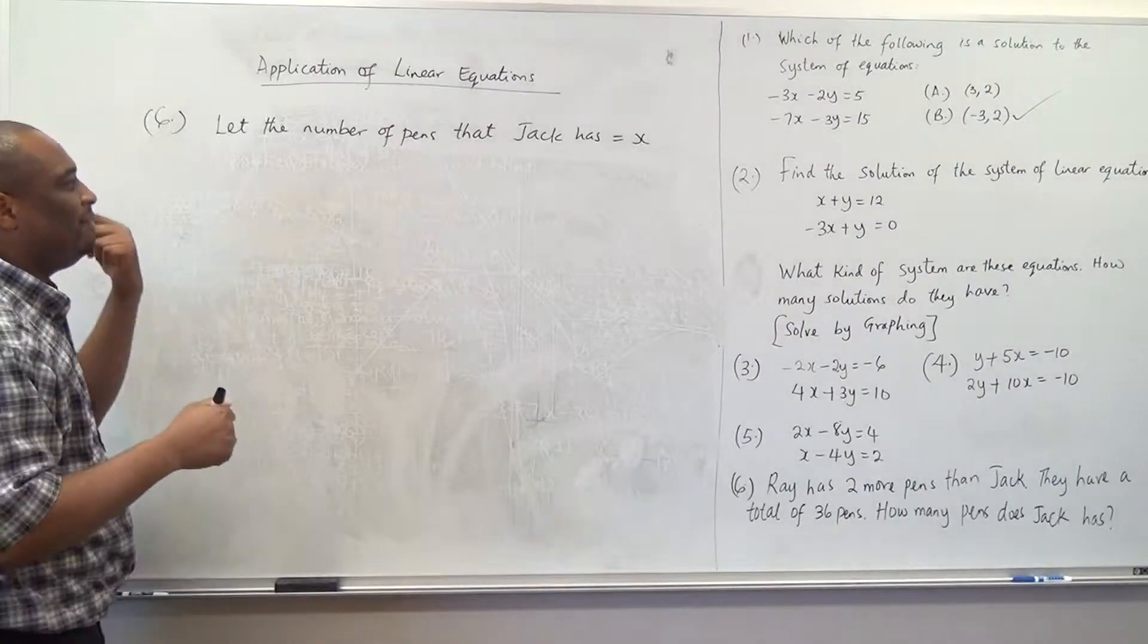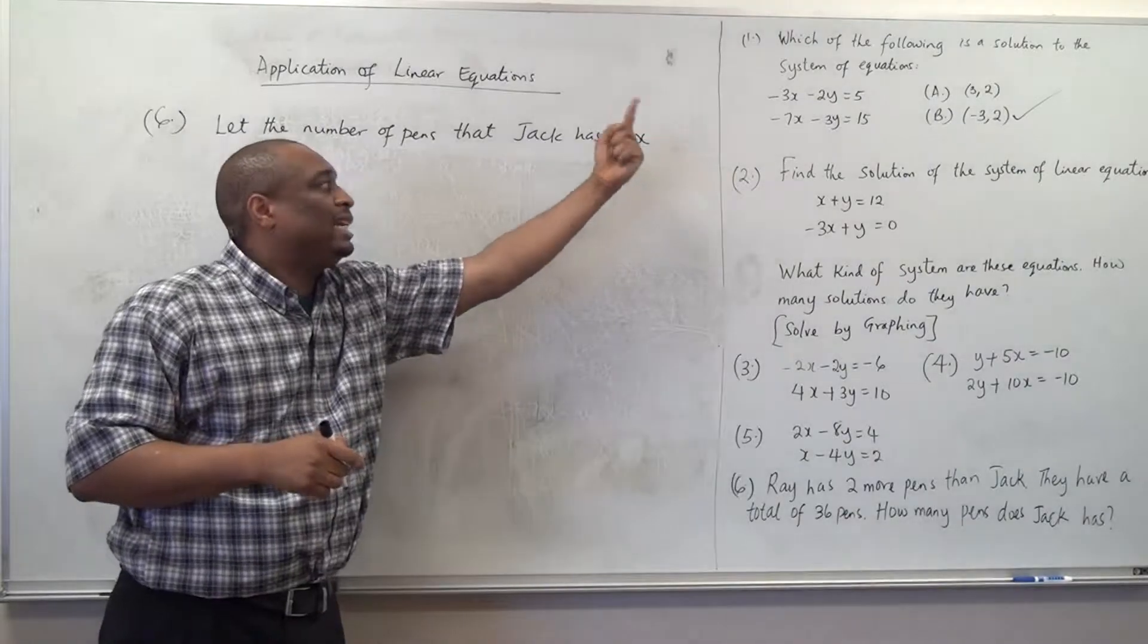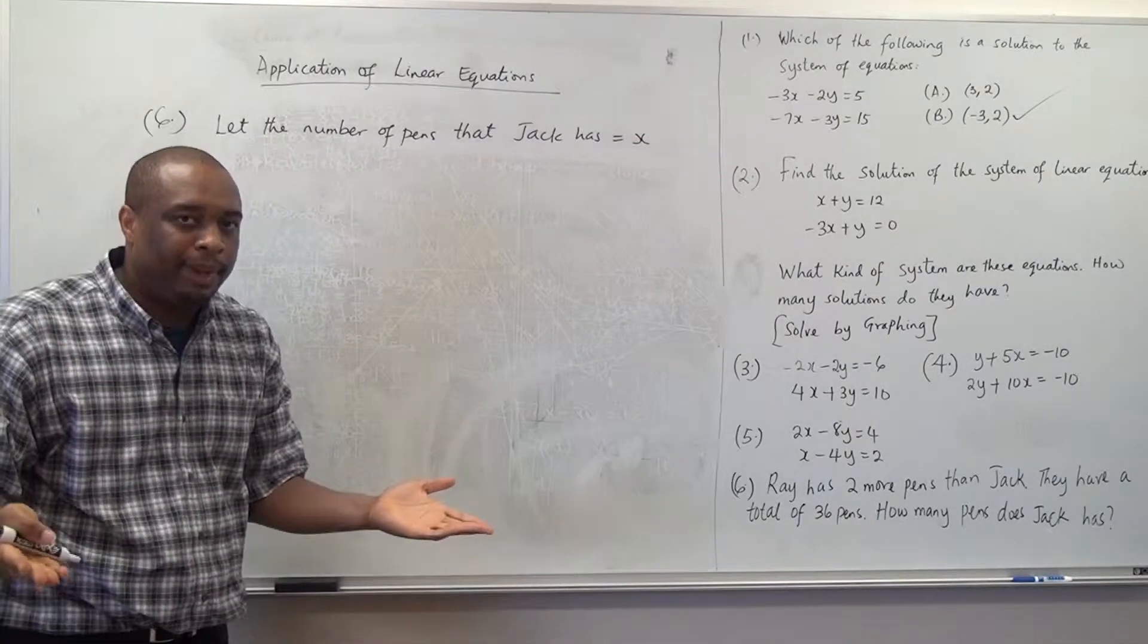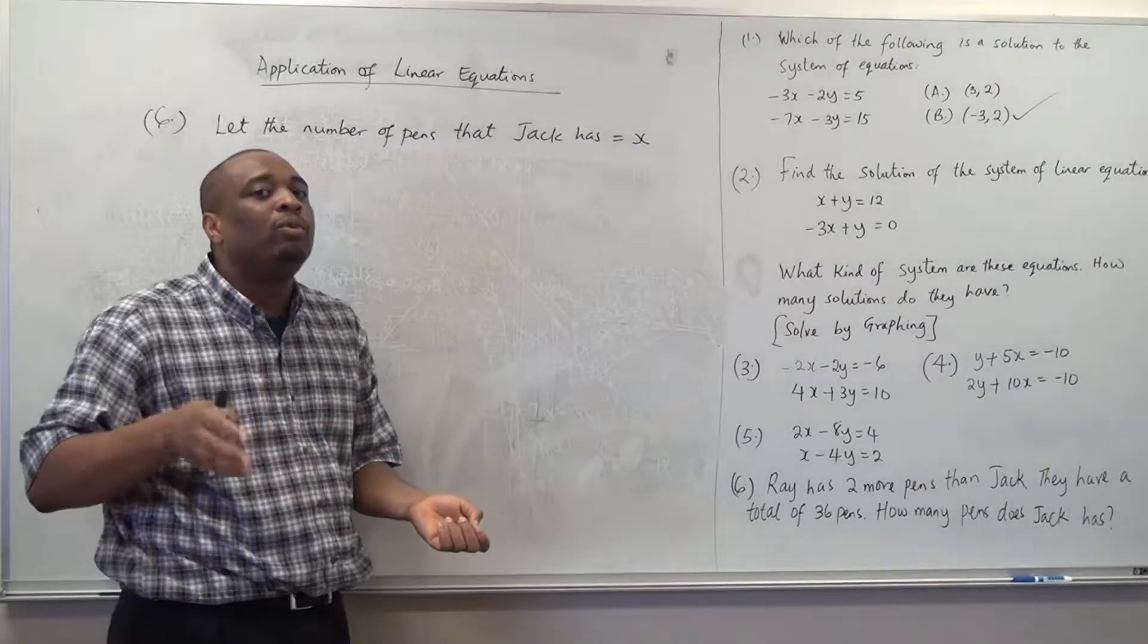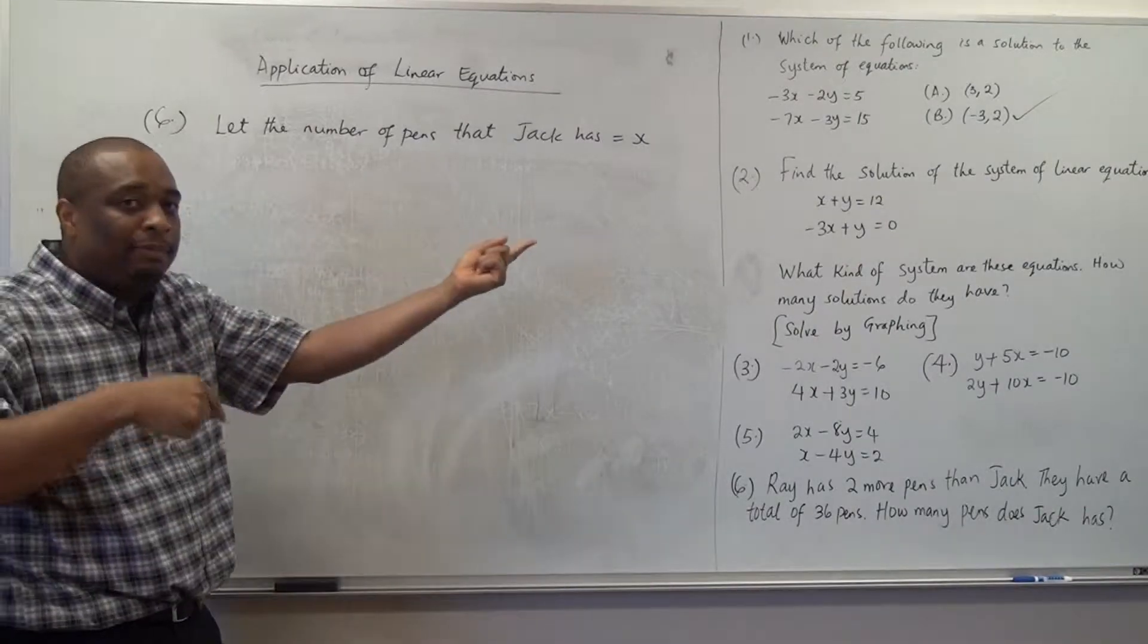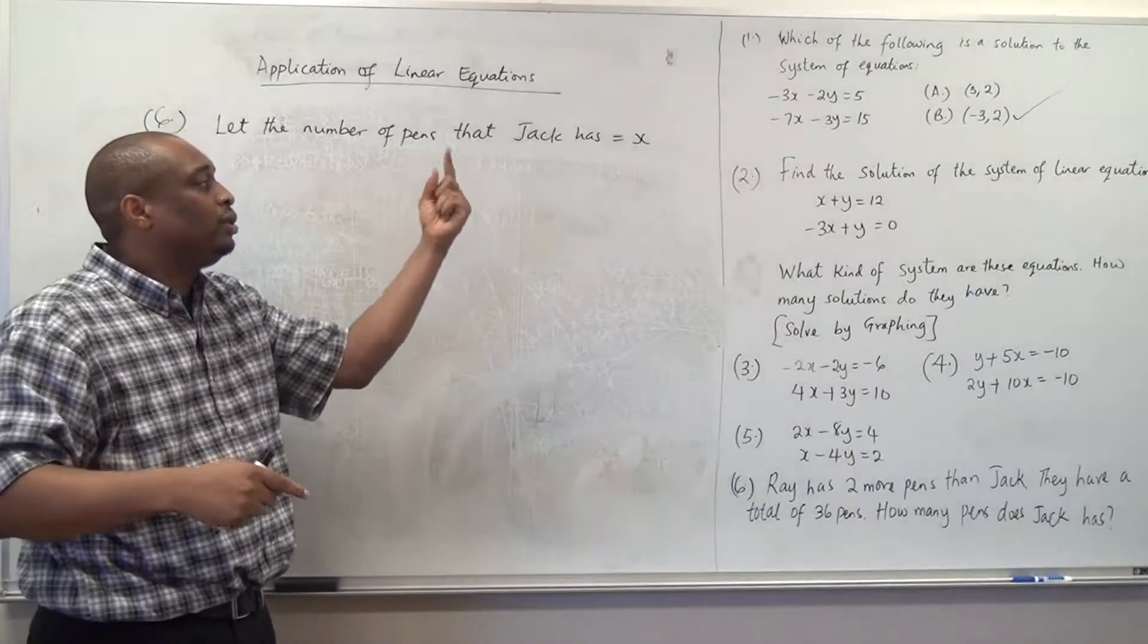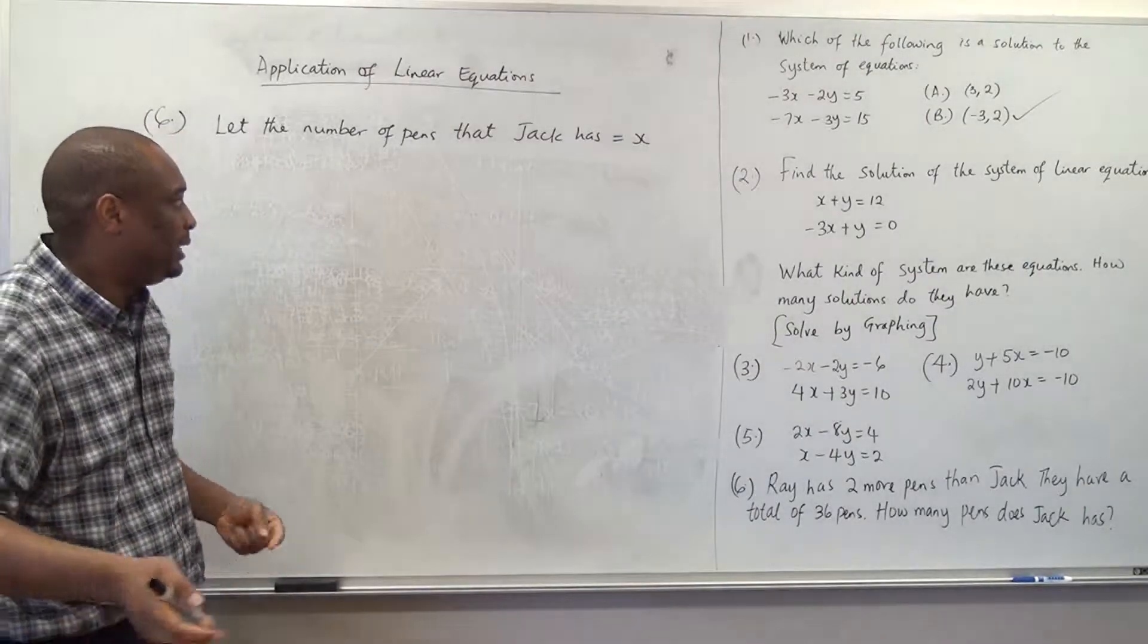But we do know that whatever the number of pence that Jack has, Ray has two more. So, if Jack has four pence, Ray has six pence. If Jack has ten pence, Ray will have twelve pence. So, if Jack has x pence, because you kept on adding two, Ray will have x plus two pence.